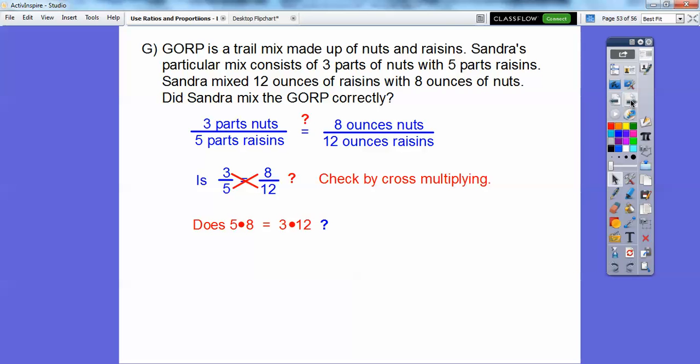Well, five times eight is 40 and three times 12 is 36. So no, it doesn't equal. So Sander did not mix the proper mixture for her gorp, okay?